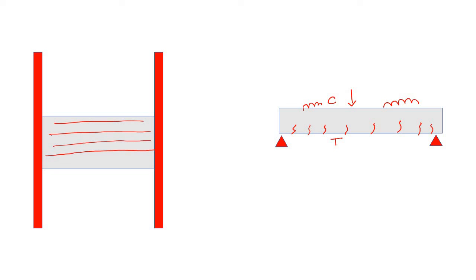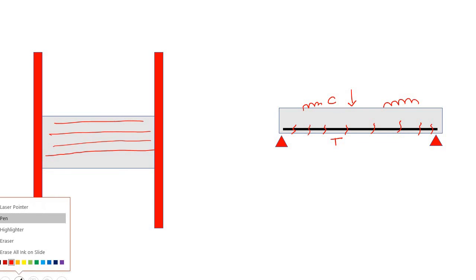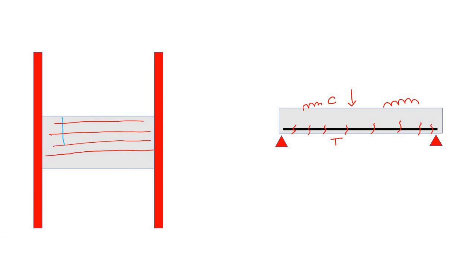Then you will provide the reinforcement along the longer direction, and this type of bar is sometimes known as a distribution bar. In cross section, it actually looks like this.